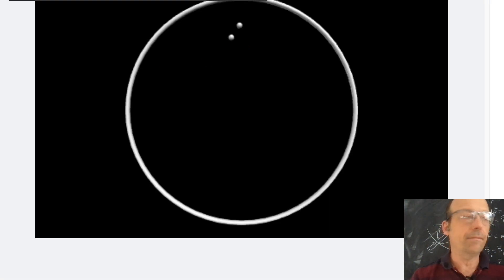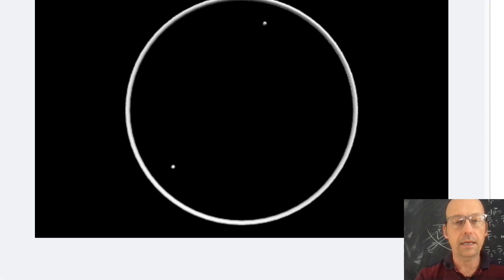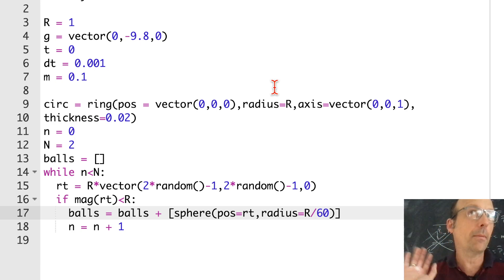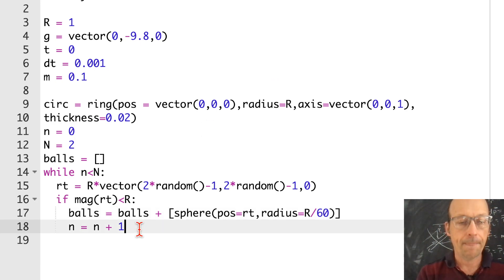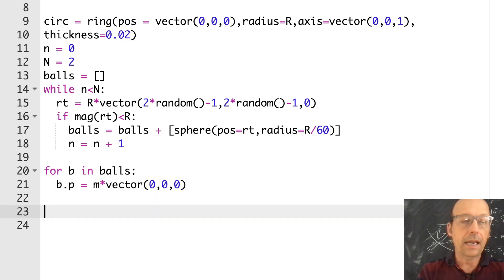There's my two balls. You know, I think in the thing, they were smaller. So let's make this 60. Try that. Yeah, that looks more like what they had. You'll notice every time I run it, they're going to be in a different position. Okay, so I have my two balls. Now what I want to do is I need to give them an initial momentum. So I can just do for b in balls, b.p is m times vector 0, 0, 0. That's fine. Now I think I can just model. Let's just let them fall.